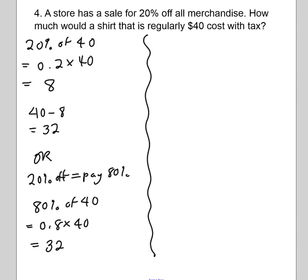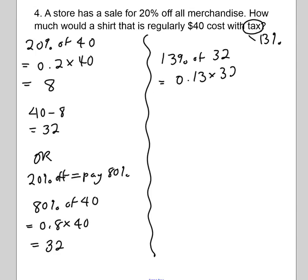It asked us to calculate with tax. In Ontario, tax is 13 percent of the amount that you pay — not 13 percent of the regular price, but 13 percent of the sale price. Find 13 percent of $32, turn it into a decimal and multiply. Because we're dealing with money, round to two decimal places. You get $4.16. Stop and think: does $4.16 make sense as the full price of the shirt? Of course not — that's just how much the tax is.